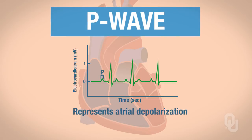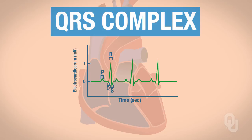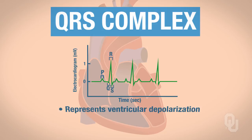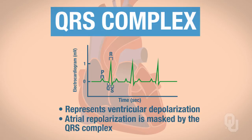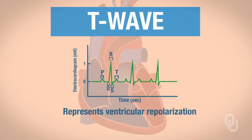The P wave represents atrial depolarization. This is an electrical event that is traveling through the atria. If you do not have a P wave, you do not have atrial depolarization. We have the QRS complex, and the QRS complex represents ventricular depolarization. Atrial repolarization is masked by that QRS complex, but the QRS complex only represents ventricular depolarization. Next is the T wave, which represents ventricular repolarization. So those are the ECG waves.